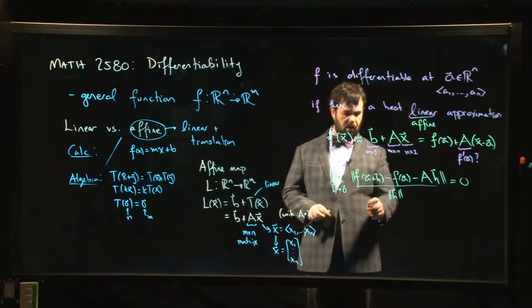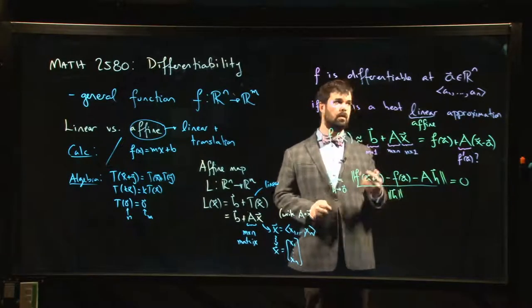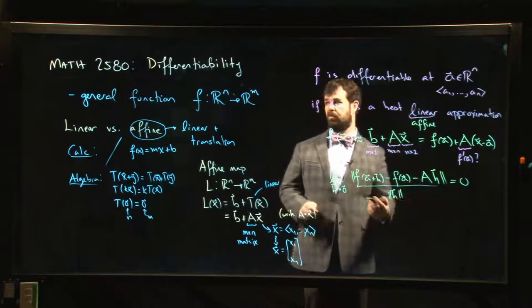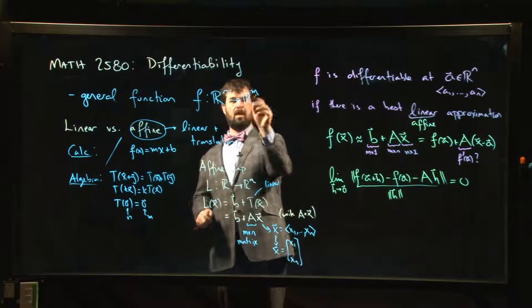So this is what it would mean to be differentiable in general, for a general function R^n to R^m. And what is this matrix A?